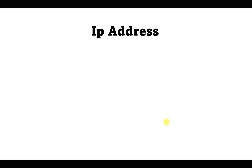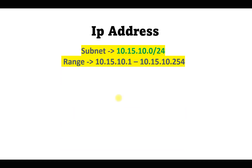In this video we will talk about IP addresses and how we can calculate many things from a subnet point of view. If you have been working in IT, you must have worked with IP addresses. For example, the subnet 10.15.10.0/24 has a usable IP range of 1 to 254, because only the last octet is changing — nothing else changes because of the /24.